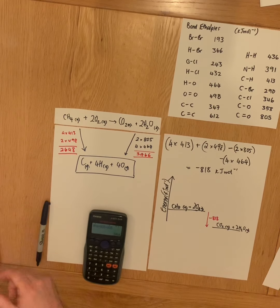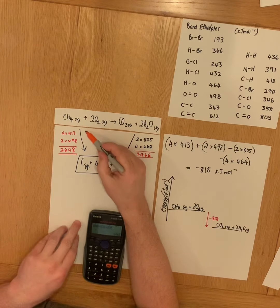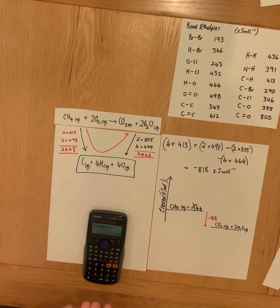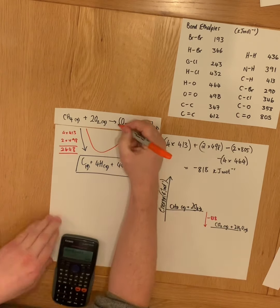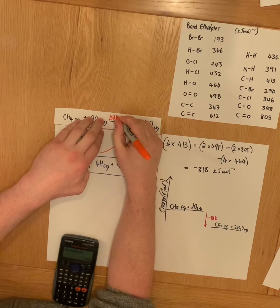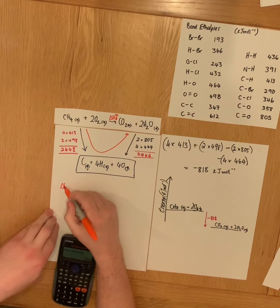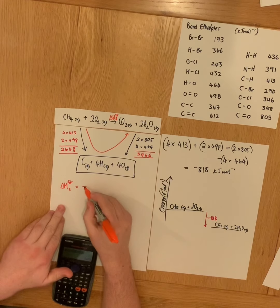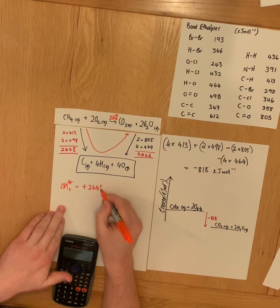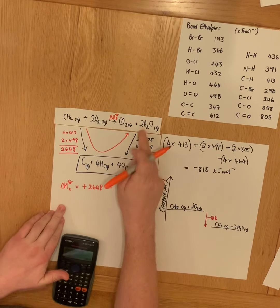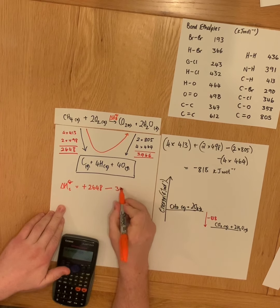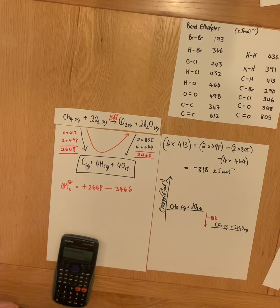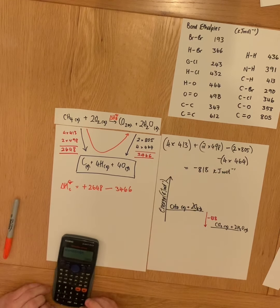Popped that into the calculator and we have a total of 3466 kilojoules. Using Hess's law to go around our cycle from reactants to products via the other route, via these atoms, our enthalpy of reaction, technically enthalpy of combustion because this is a combustion reaction, will be equal to plus 2648 minus, because we're going the wrong way up this arrow, 3466. Bond breaking endothermic, bond forming exothermic. Pop that into our calculator.